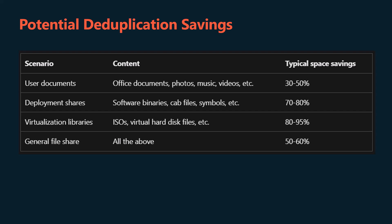User documents such as Office documents, photos, music, videos, etc. — estimated 30 to 50% saving. Deployment shares that host software binaries, cab files, symbols, etc. — estimated 70 to 80% saving. Virtualization libraries that host ISOs, virtual hard disk files, etc. — estimated 80 to 95% saving. General purpose file shares — estimated 50 to 60% storage saving.